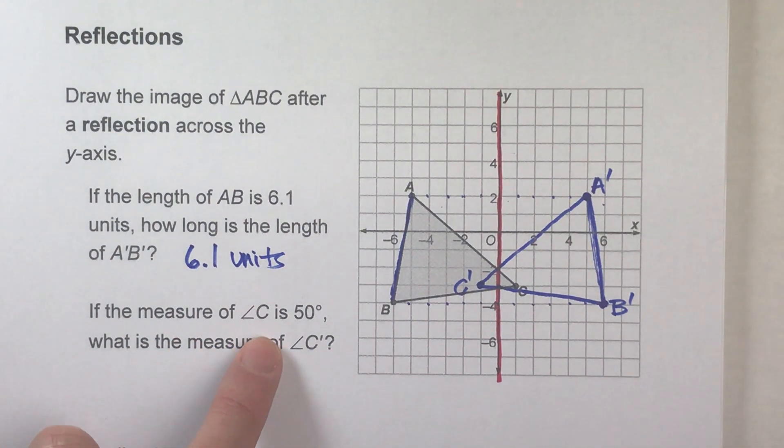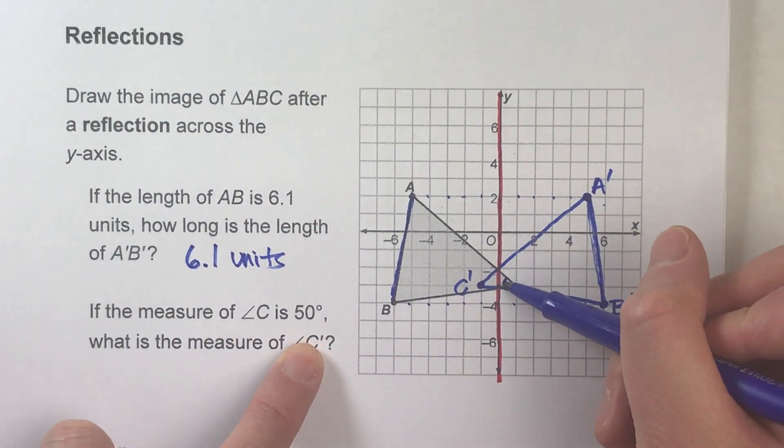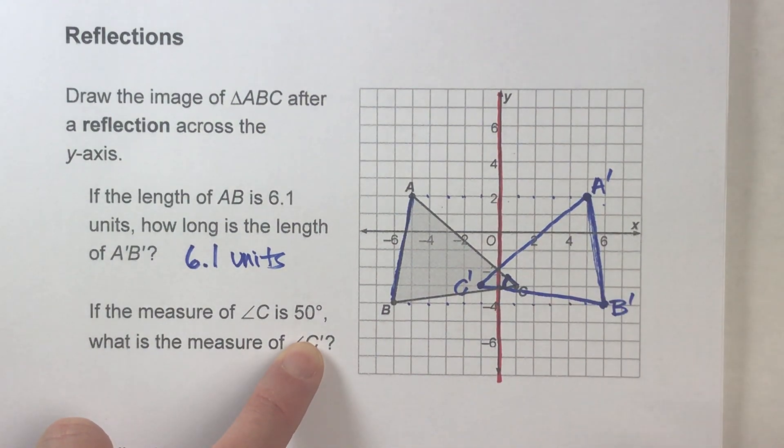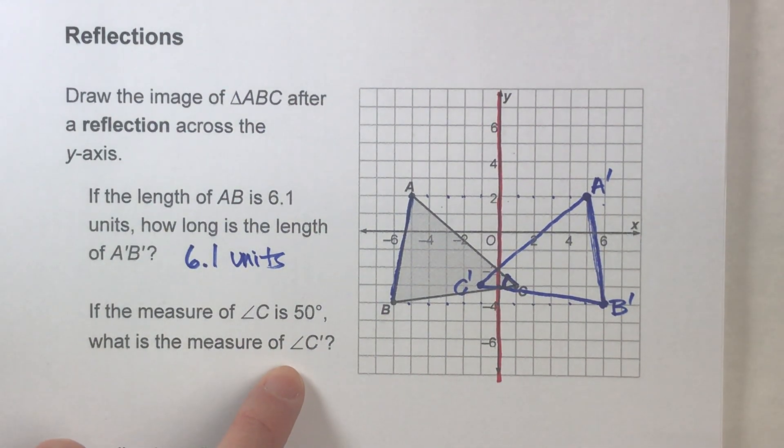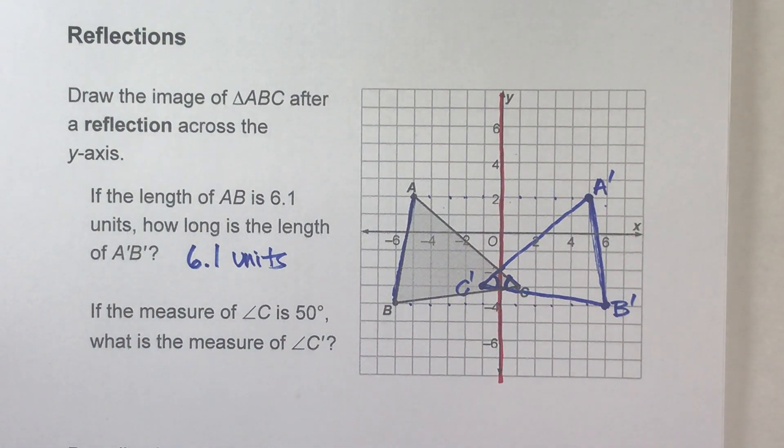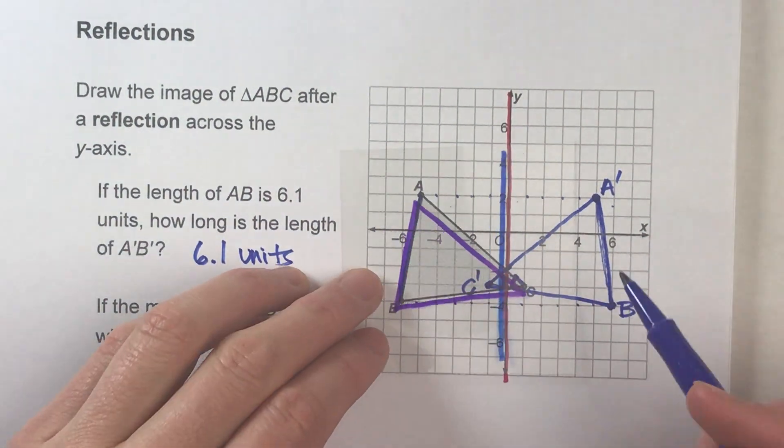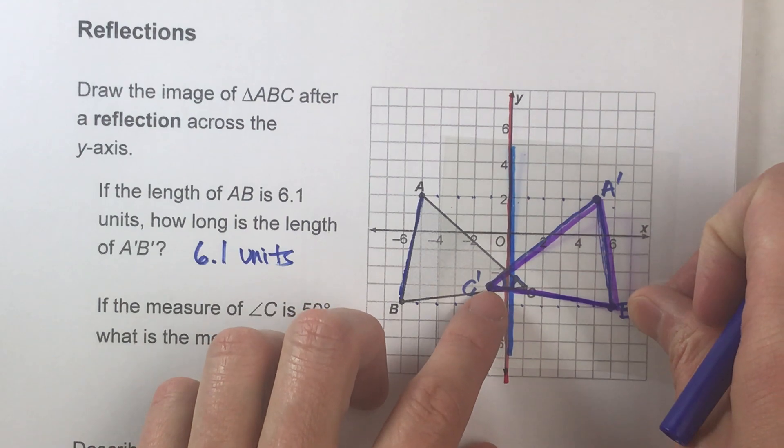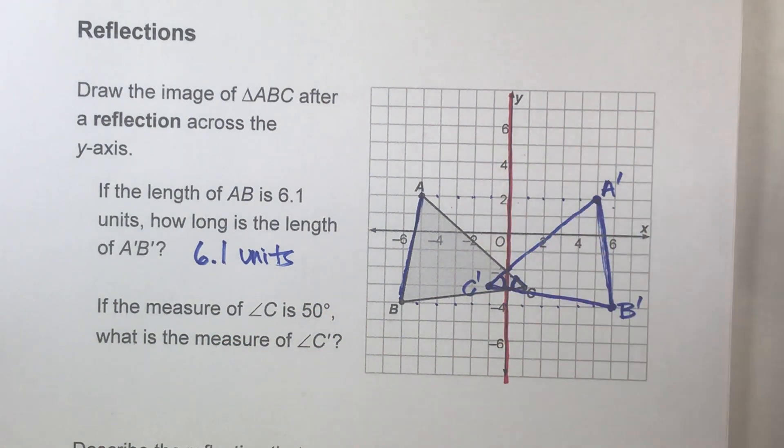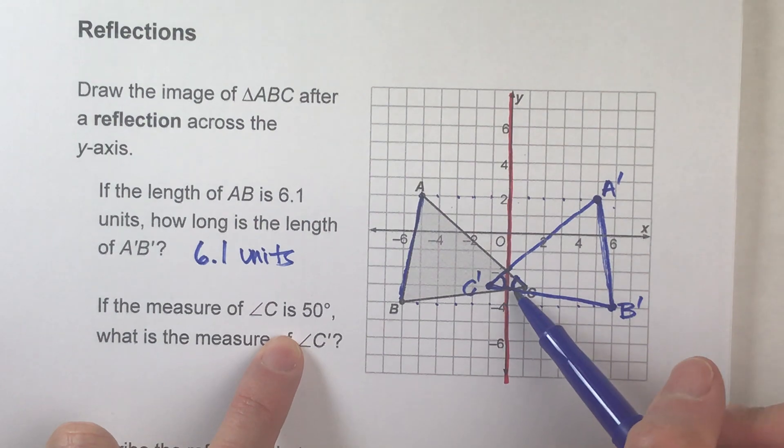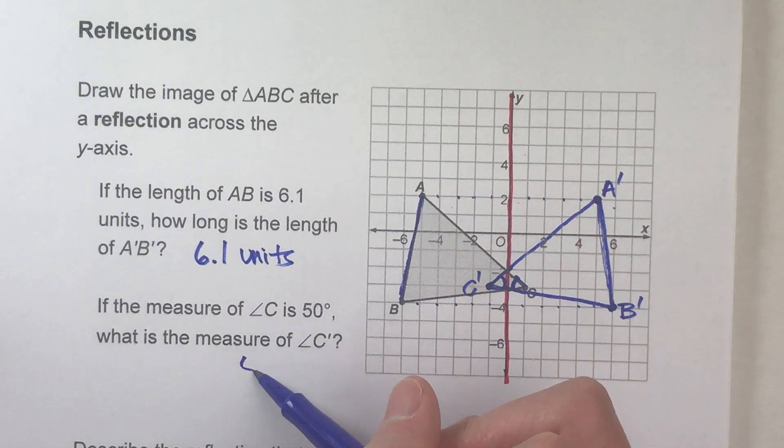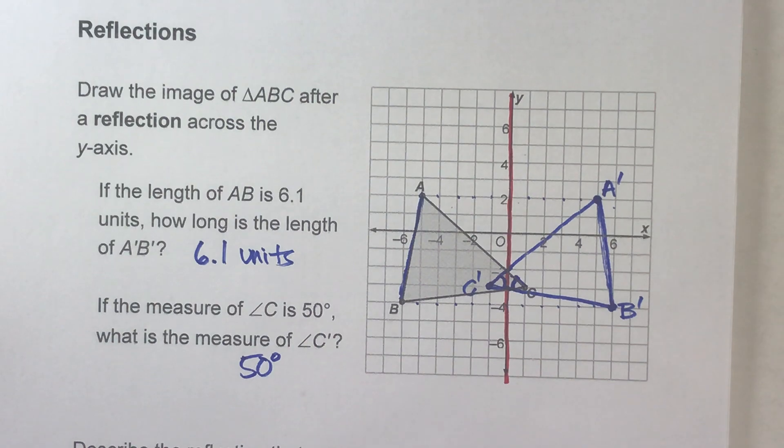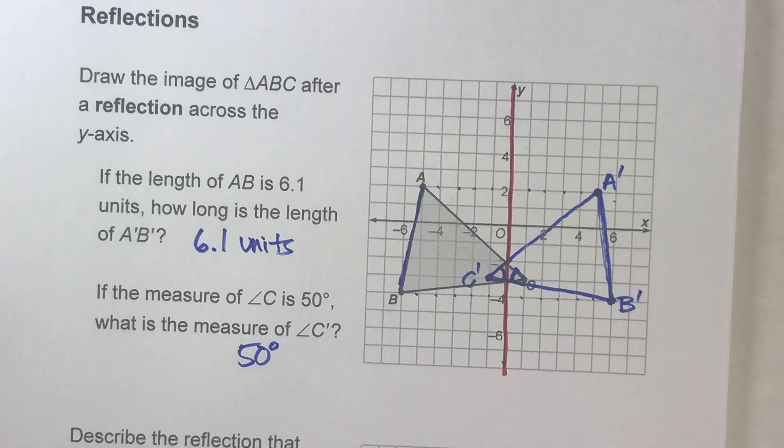And if the measure of angle C is 50 degrees, that's this angle right here, it's a little hard to see because it's kind of in the middle there. What's the measure of angle C prime? That's this angle right here of the reflected triangle. Again, the triangles are congruent, and those angles should be the same, because this angle right here, when I reflect it, is the same part of the triangle on the reflected triangle. So if C has an angle measure of 50 degrees, C prime should also have an angle measure of 50 degrees.